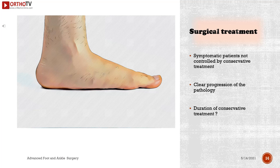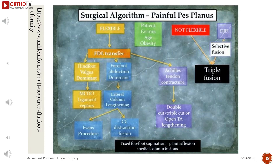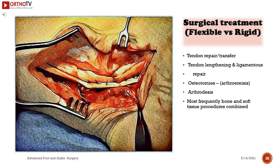Surgical treatment is indicated for symptomatic patients not controlled by conservative treatment with clear progression of pathology. Looking at the surgical treatment algorithm: if the deformity is flexible, consider flexor digitorum longus (FDL) transfer. If lateral hindfoot valgus is dominant, consider medial calcaneal displacement osteotomy with ligament repair. If forefoot abduction is dominant, consider lateral column lengthening (Evans procedure). If Achilles contracture is detected, consider Achilles tendon lengthening. If the deformity is not flexible and degenerative arthritis exists, consider isolated subtalar arthrodesis or triple arthrodesis. If fixed forefoot supination and plantar flexion deformity exist, consider medial column fusion.